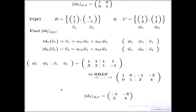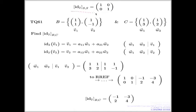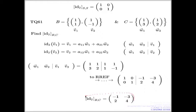Comparing questions 60 and 61: we kept the map unchanged — the identity map on both occasions. But we changed the bases, and the result changed significantly. The matrix of the identity map with respect to the new set of bases B and C is no longer the identity matrix.